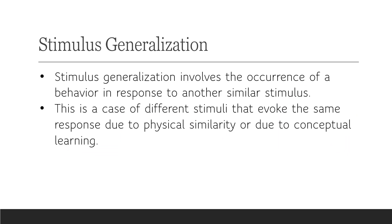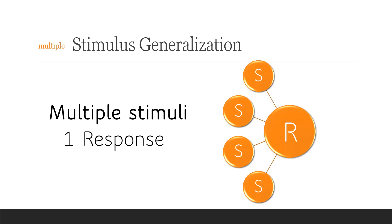Stimulus generalization involves the occurrence of a behavior in response to another similar stimulus. This is a case of different stimuli that evoke the same response due to physical similarity or conceptual learning. A helpful trick to remember this: put 'multiple' in front of the word, so it reads 'multiple stimulus generalization,' which translates to multiple stimuli and only one response. Here's the visual to accompany it — let's look at an example to further understand that.